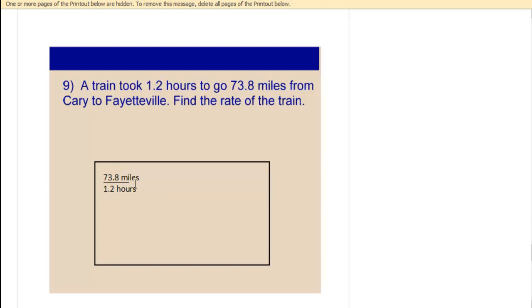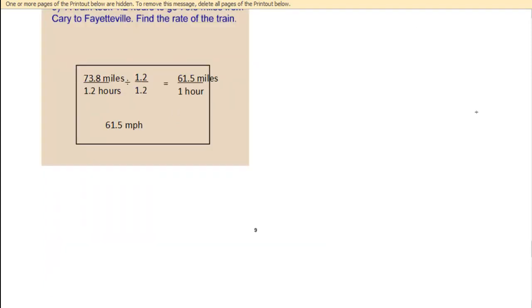And since this is a fraction, if you divide the denominator by 1.2, what do you have to do to the numerator? The same. We have to divide both by 1.2. When you divide by 1.2 in the numerator and denominator, you get 61.5 miles in the numerator and one hour in the denominator. So this is 61.5 miles per hour.